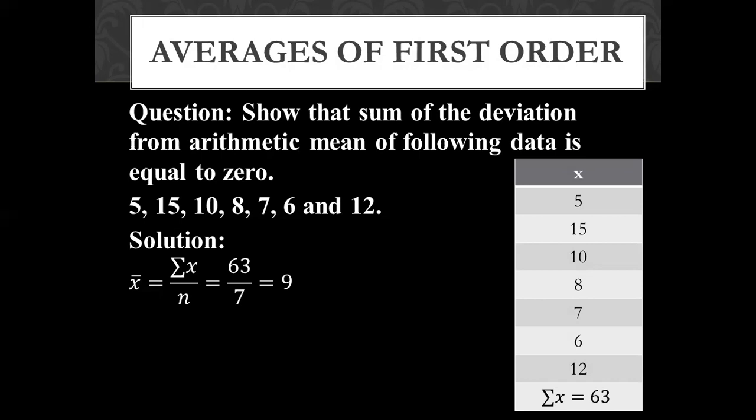5, 15, 10, 8, 7, 6, and 12. We will take the mean first. We will calculate the mean. How will it be? We will total all the values of x. The total is 63 and total number of values is 1, 2, 3, 4, 5, 6, 7. Now, we will divide this 63 by 7. So the answer is 9. Now, we have to prove the property. We have to make x minus x bar. So how will we do? From x values we will minus x bar value 9.